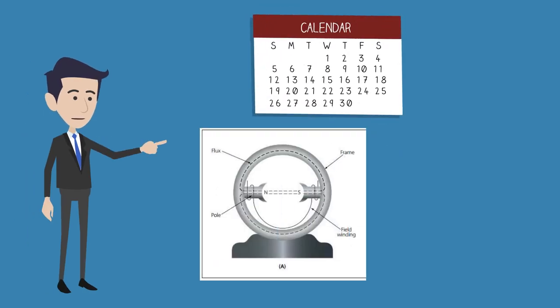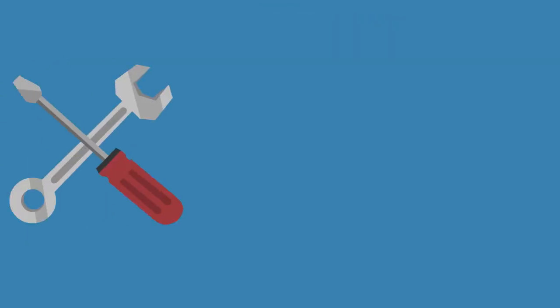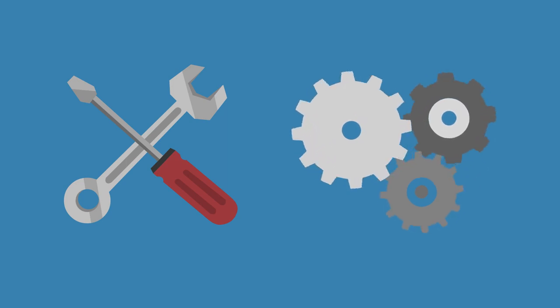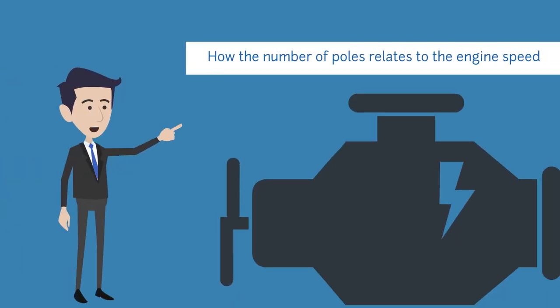Today we're going to explain about 2-pole and 4-pole alternators on fixed-speed diesel generators and how the number of poles relates to the engine speed.